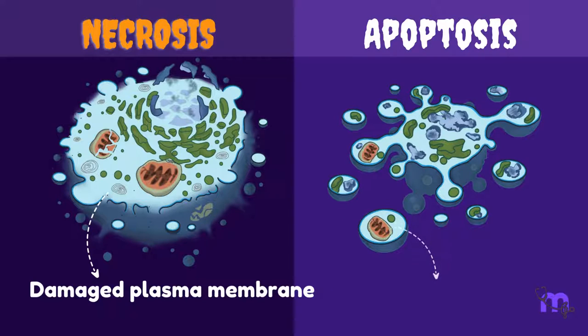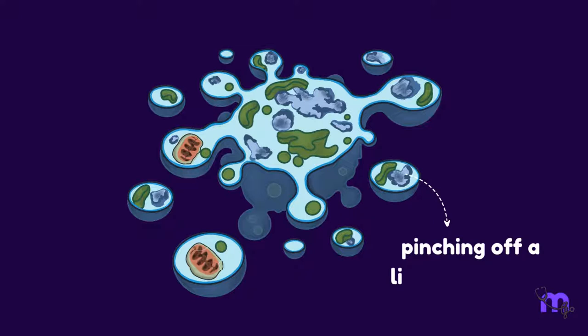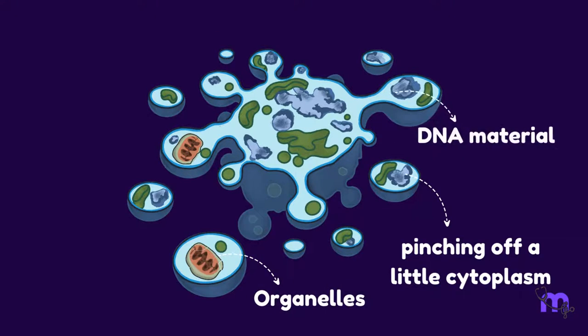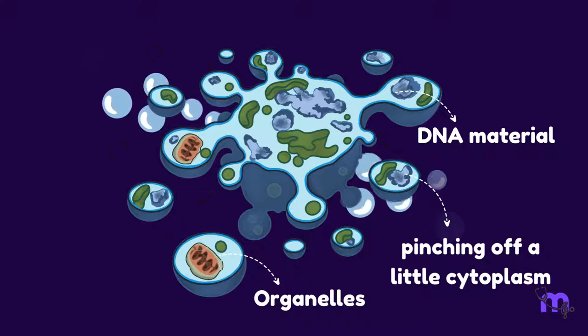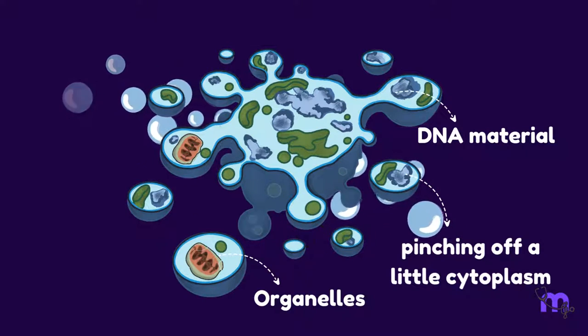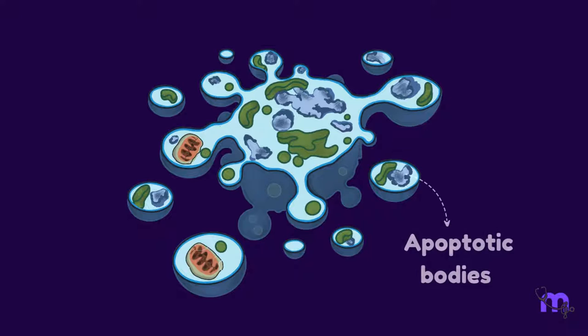It fragments into small segments, pinching off a little cytoplasm, a few organelles and some DNA material to form many bubble-like structures with a little bit of everything. These are called apoptotic bodies.